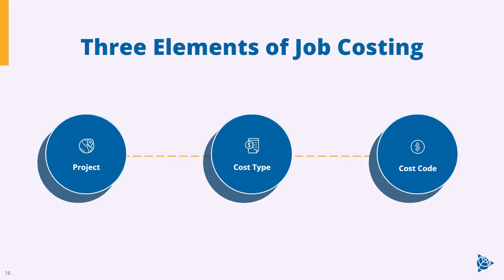Now that you know some accounting and job cost basics, let's take a closer look at the three basic elements of job costing. When a construction accounting team posts an accounting transaction, their system will ask for three pieces of information: What project did we spend this money on? What type of cost is it — for example, is it labor, equipment, or materials? And third, how was the money spent — was it on a CSI division, a specific kind of activity, or a phase of the project?